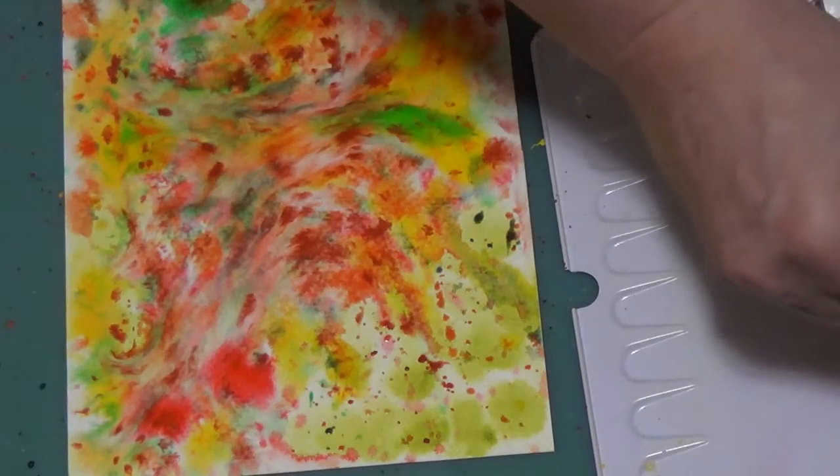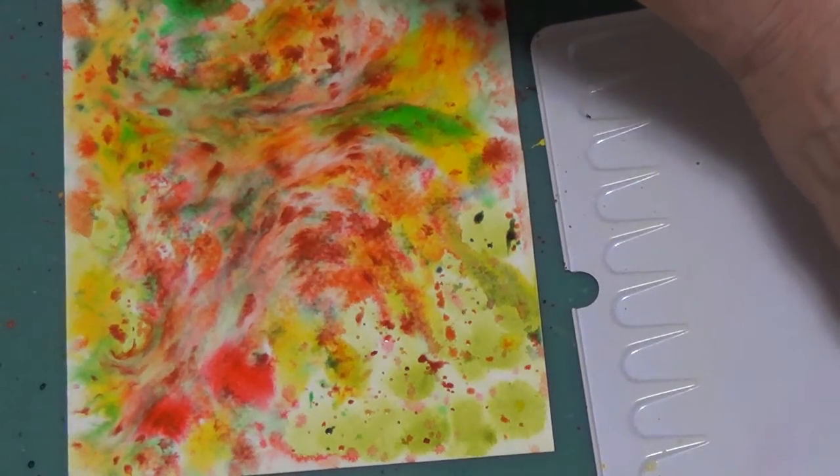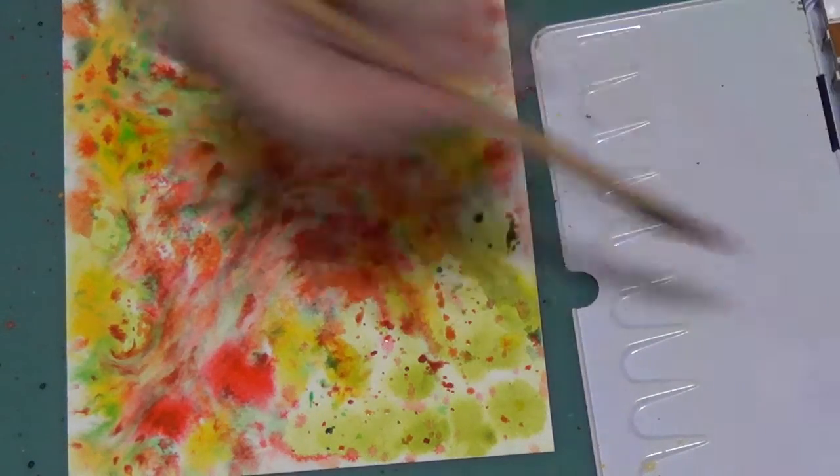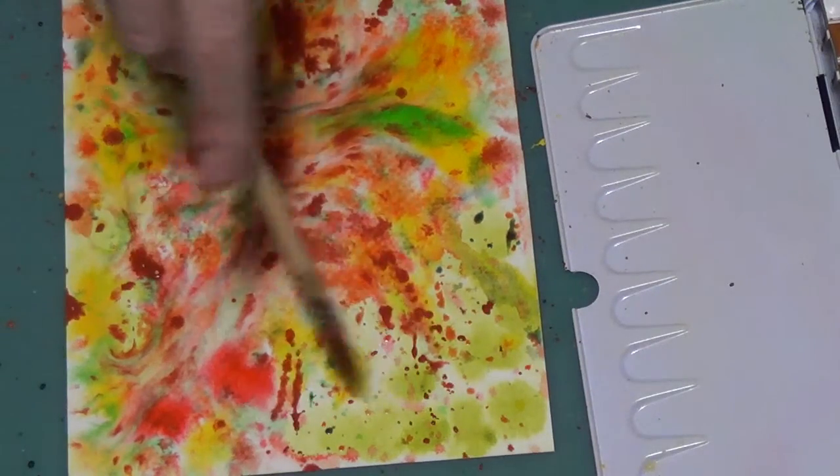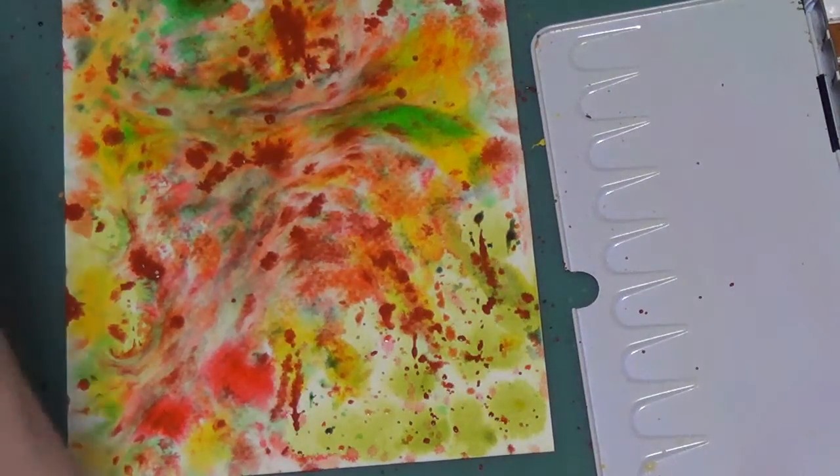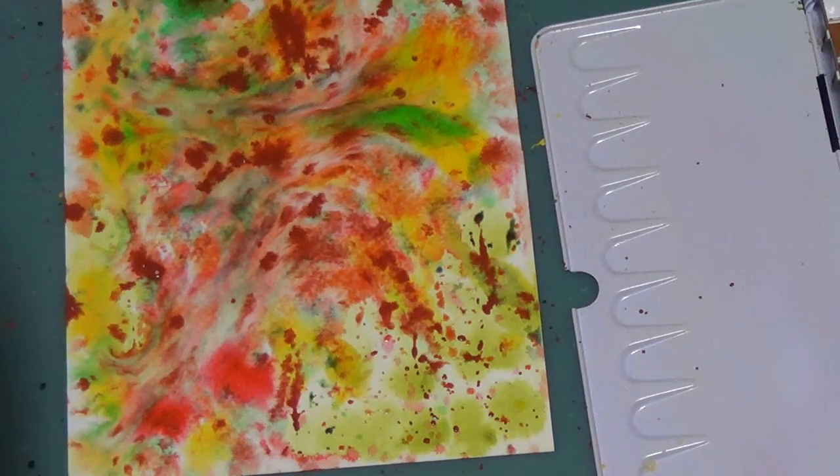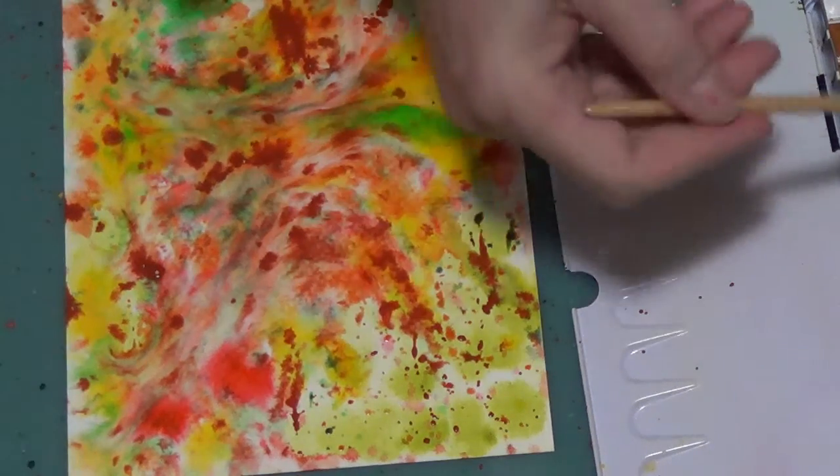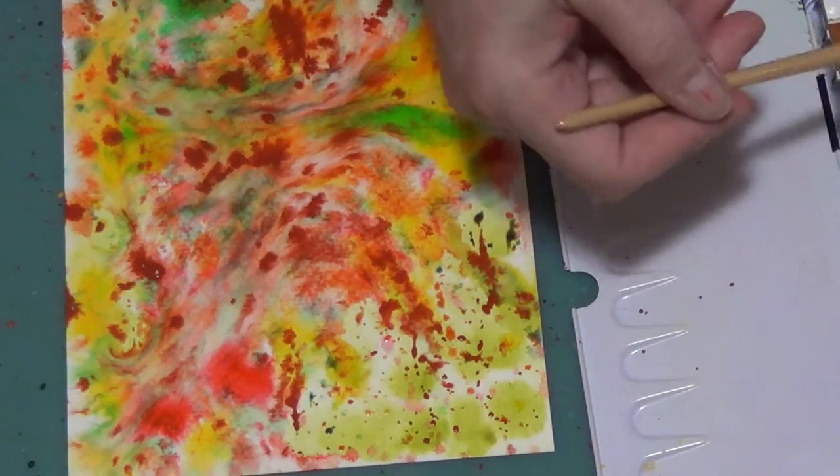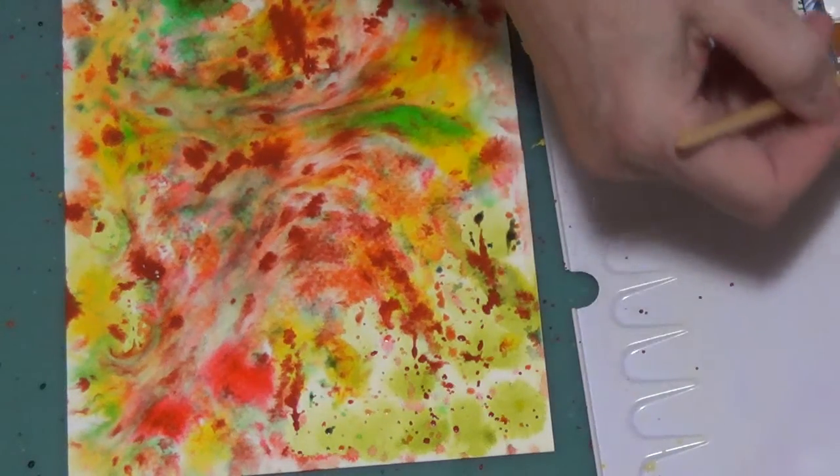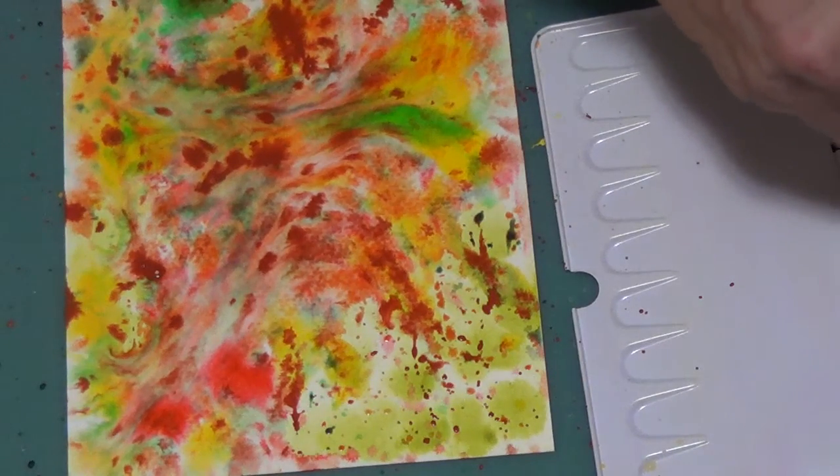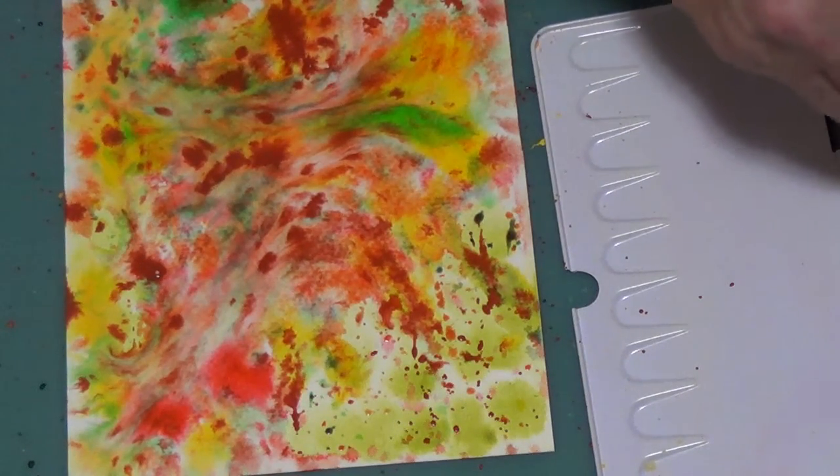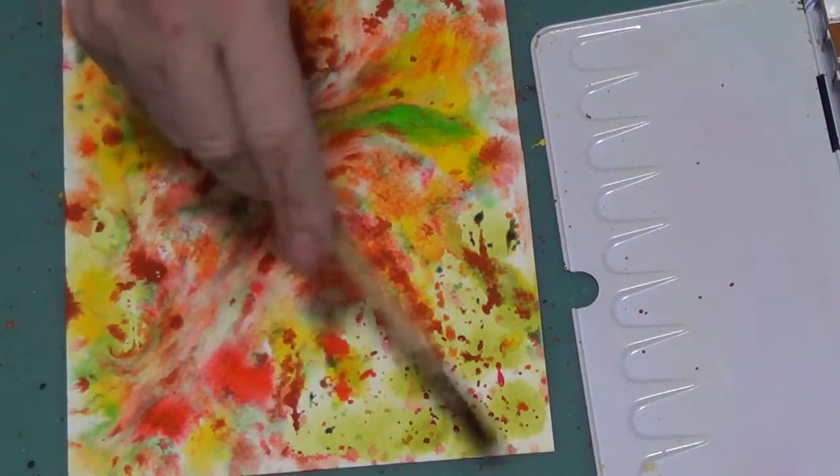Now we're going to get some burnt sienna. Your quinacridones are really good for this technique. Then we have some quinacridone coral. That's a reddish orange. We're going to put that up here.